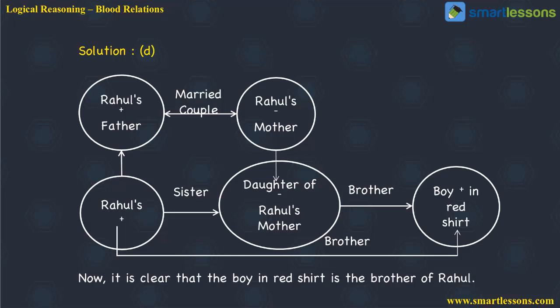Draw Rahul's father vertically upward. Rahul's father's wife would be Rahul's mother or stepmother — draw her horizontally. Now, the daughter of father's wife means Rahul's mother's daughter, so draw that vertically downward. That daughter is obviously Rahul's sister. The person in the red shirt is the younger of the two brothers of Rahul's sister, so draw him horizontally at the same parallel level.